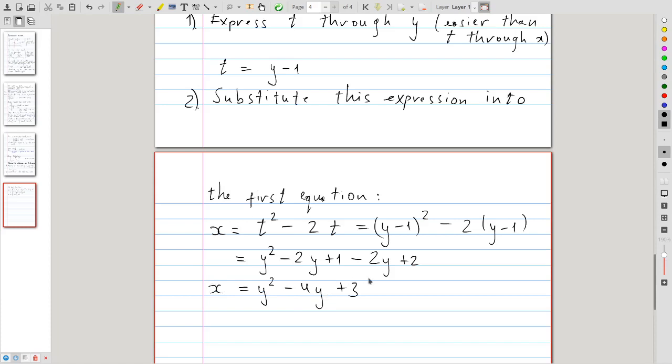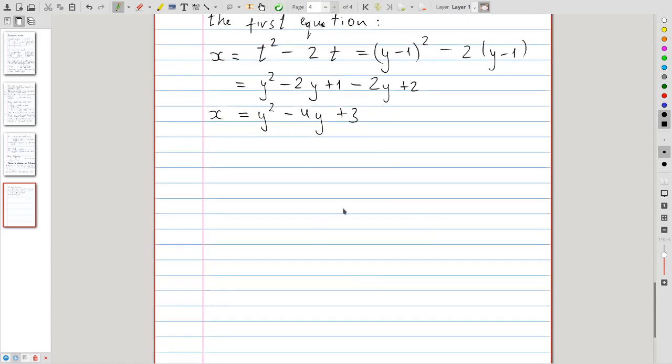And so this now can be treated as an ordinary curve. You see that this describes a parabola oriented horizontally.